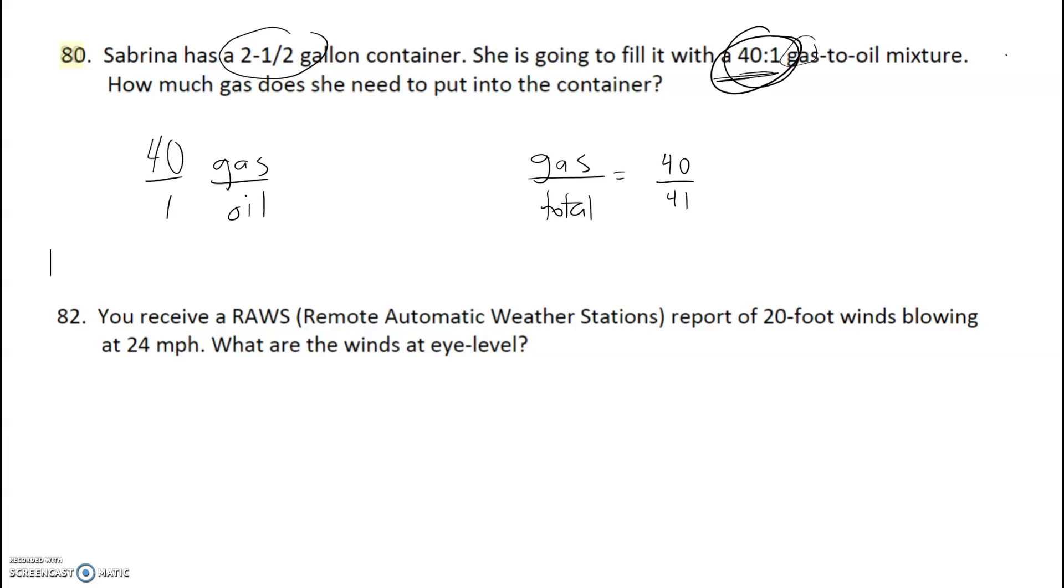Once we get our new ratio - they didn't give us that, that's why this one's a little tricky - then we can answer the question because the total is what's given. You just have to kind of interpret that the total amount of liquid, if the container is filled, is going to be 2.5. So once we have this set up for our container, our total is 2.5, so how much of that should be gas? Most of it should be gas, right? 40 to 1 is almost all gas, so our answer should be somewhere close, not too far from 2.5.